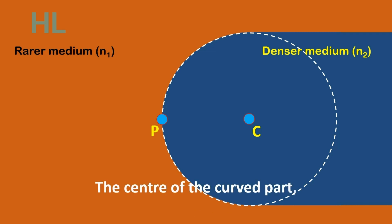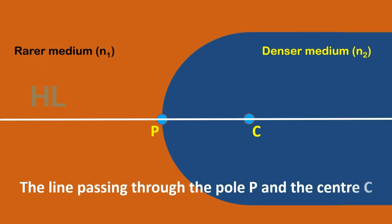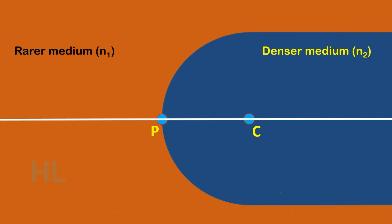The centre of the curved part is the pole P of the curvature. The line passing through the pole P and the centre C is the principal axis of the curved surface.